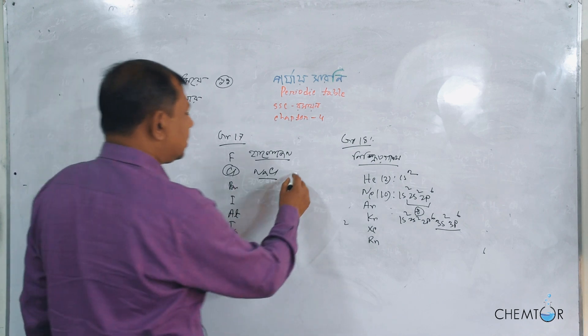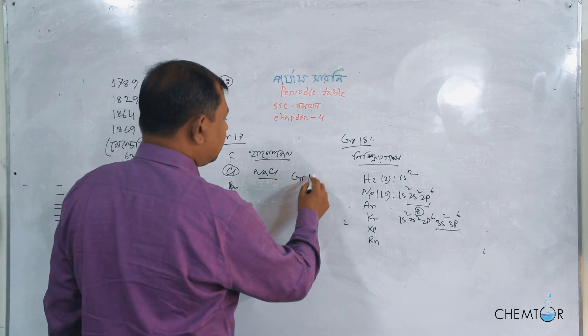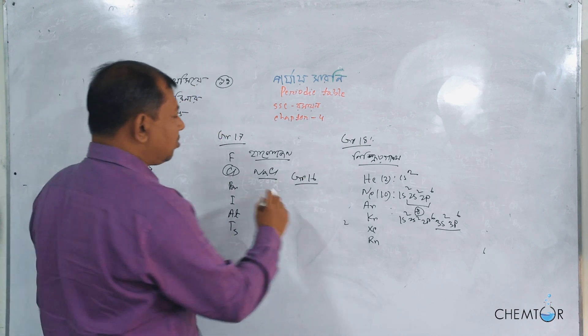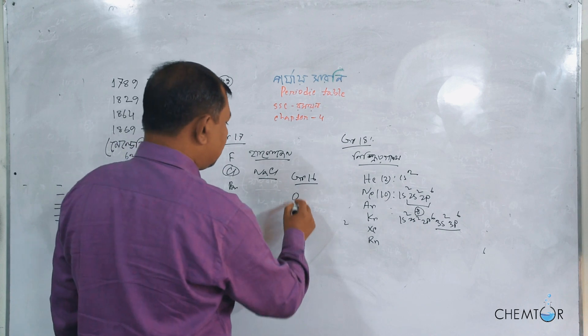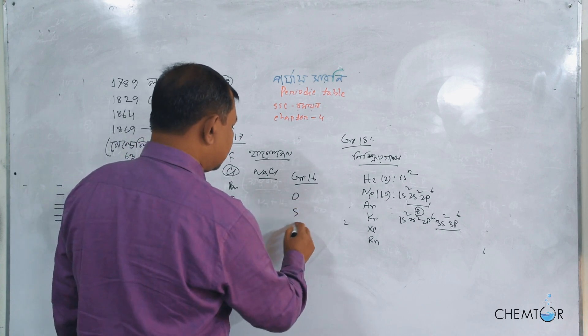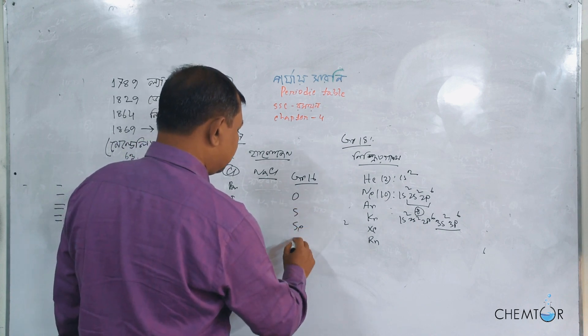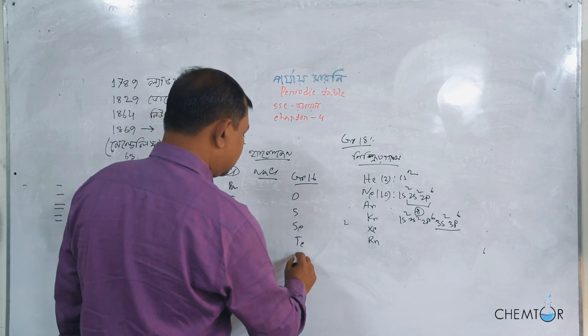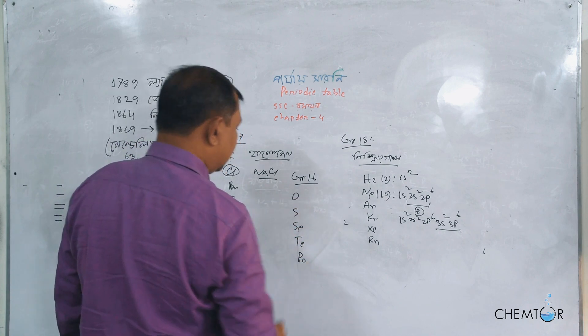Here we go, Group 16. Group 16 has oxygen, sulfur, selenium, tellurium, and other things.